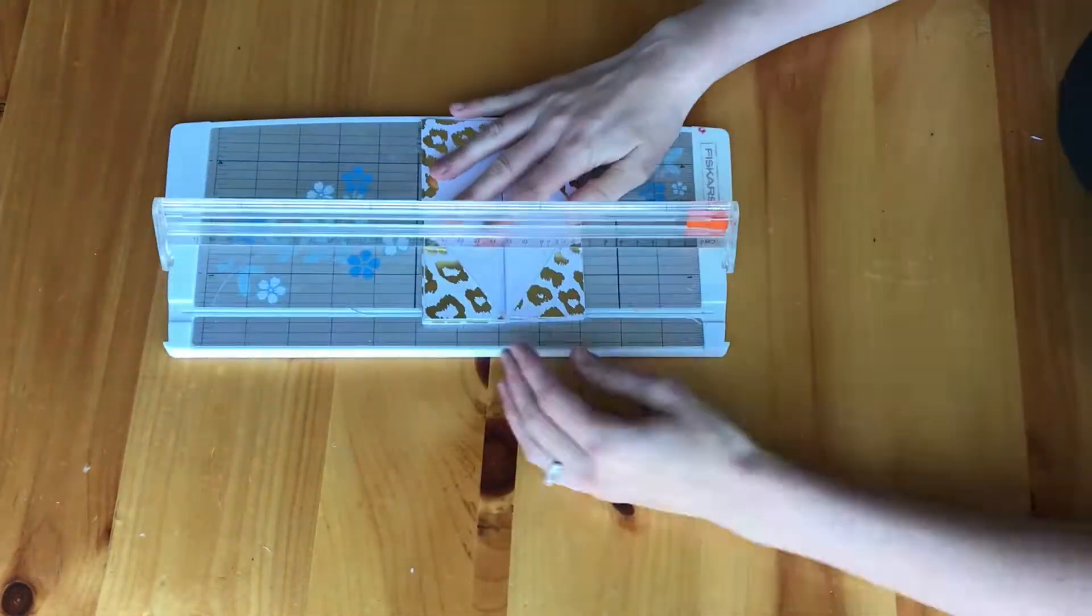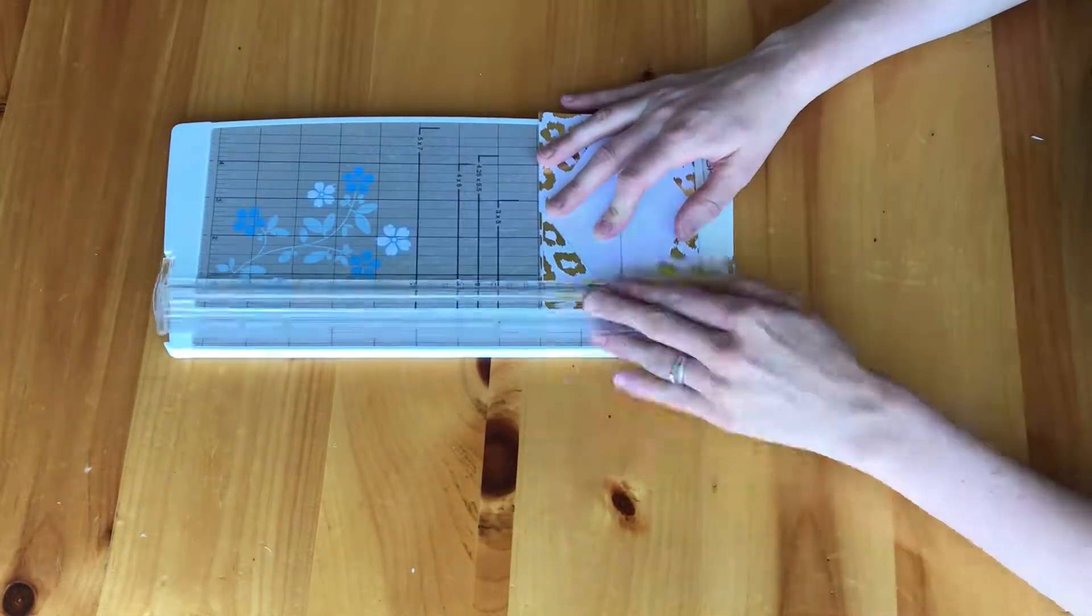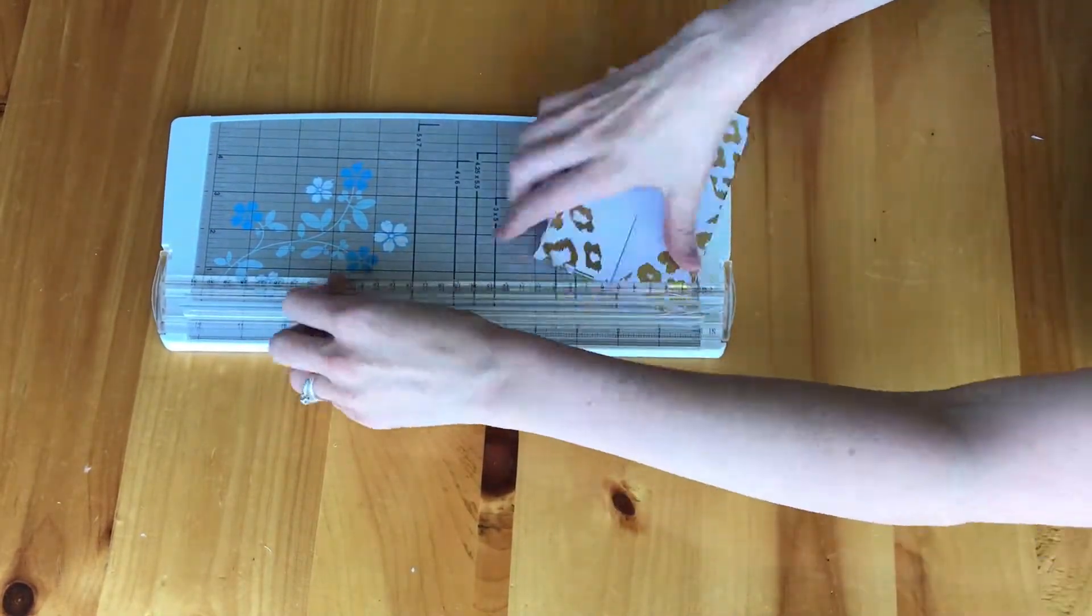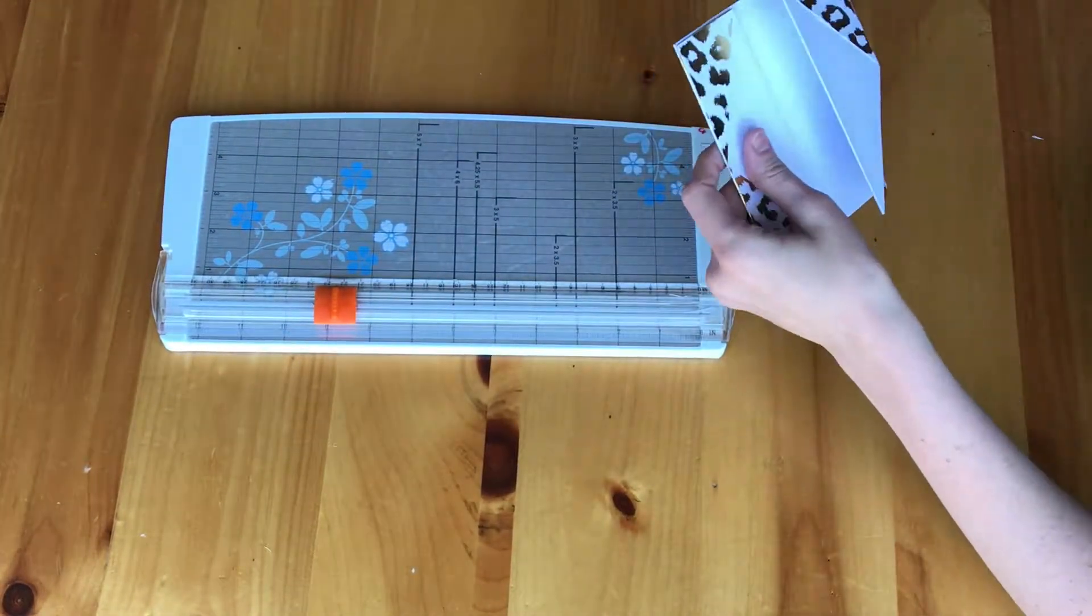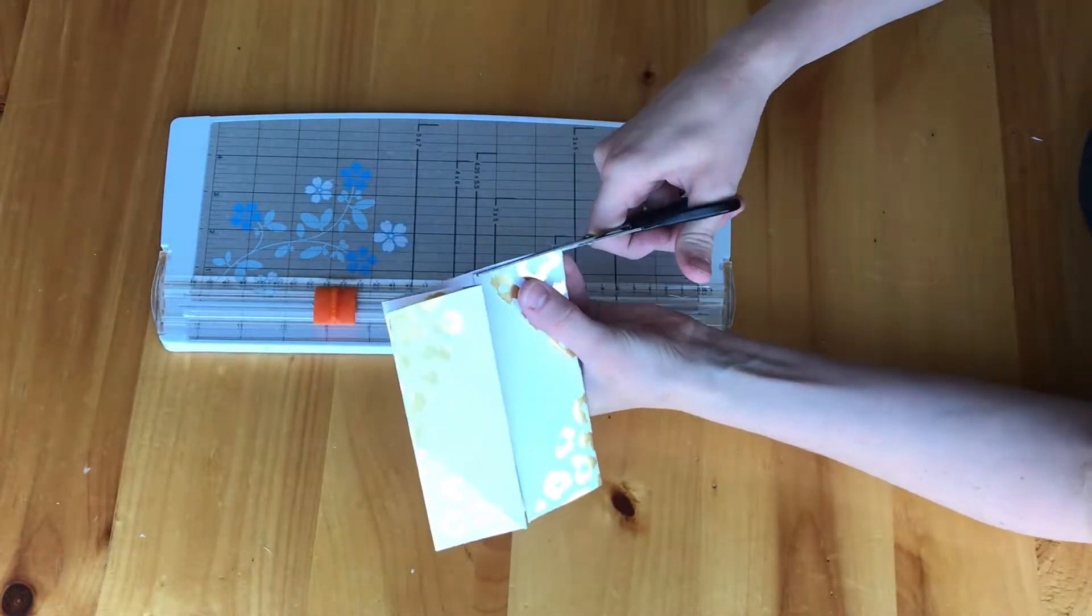So, what I like to do to even out the card is to take my cutter and just cut along the bottom and the top so that it's nice and even.